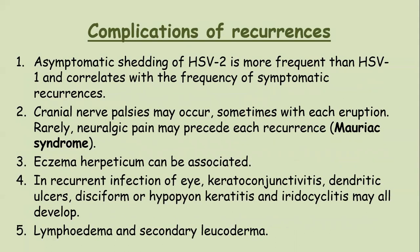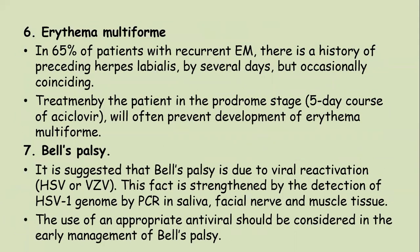Asymptomatic shedding of HSV-2 is more frequent than HSV-1 and correlates with frequency of symptomatic recurrences. Cranial nerve palsies may occur with each eruption. Radioneuralgic pain may precede each recurrence, which is called Moriac syndrome. Eczema herpeticum can be associated with recurrent infection. Recurrent eye infection may cause keratoconjunctivitis, dendritic ulcers, disciform or hypopyon keratitis, and irido-cyclitis. Lymphedema and secondary leukoderma also develop.